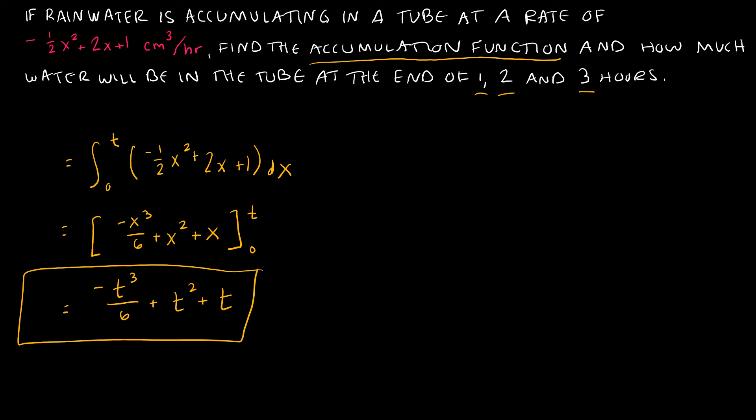So why is that helpful? Because now all I have to do is plug in 1, plug in 2, and plug in 3 to find the solution for each of those values of time. So if I plug in 1, I get negative 1 cubed over 6, so negative 1 sixth, plus 1 squared, which is 1, plus 1, which gives me 1 and 5 sixth cubic centimeters.